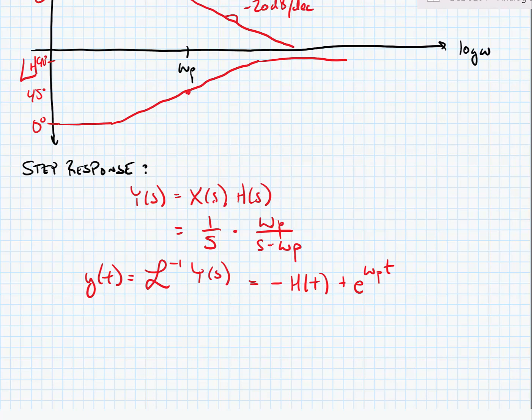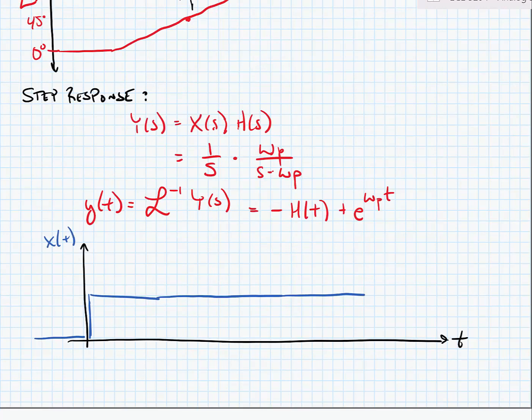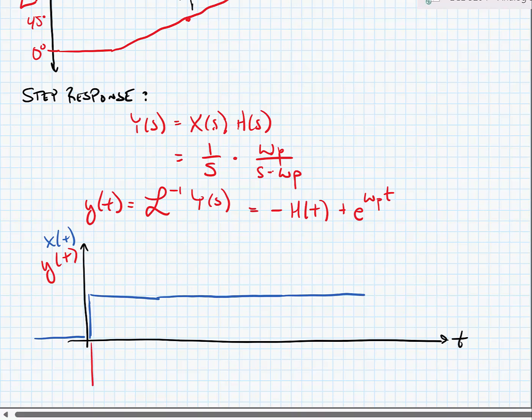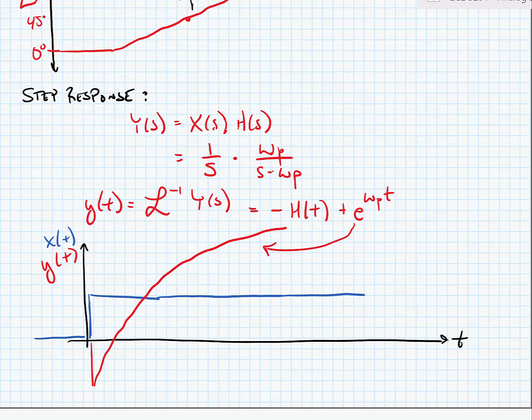Let's plot the step response. Here we put our input in x of t, which is just a step function. And what we would see from y of t would be, it would first step down and then it would grow exponentially given by this e to the omega p times t.